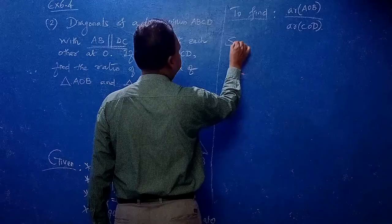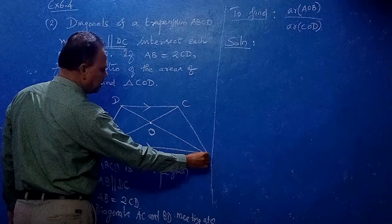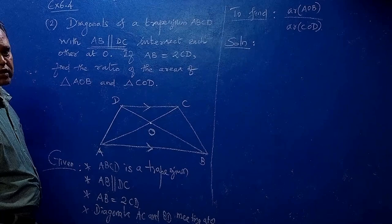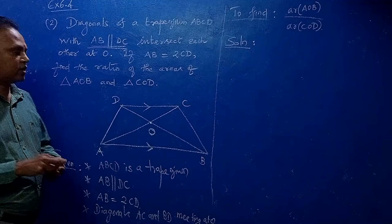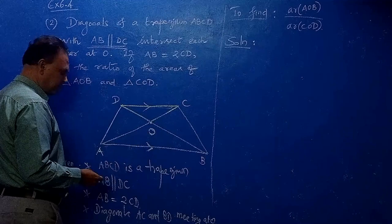See the solution. First, what we have to prove is that Triangle AOB and Triangle COD are similar. For that, make a coloring of the two triangles and prove them similar using angle relationships.